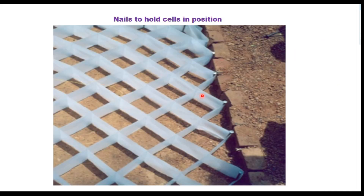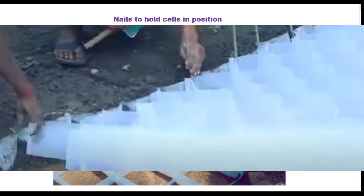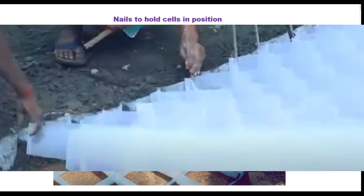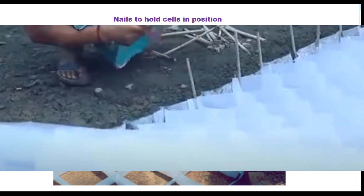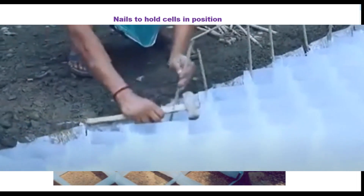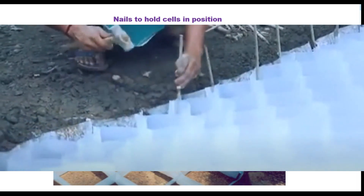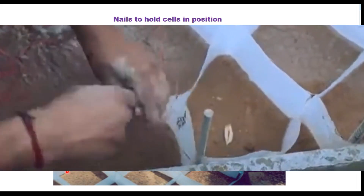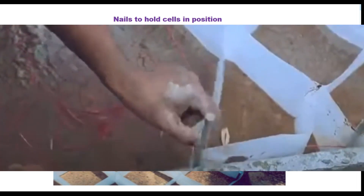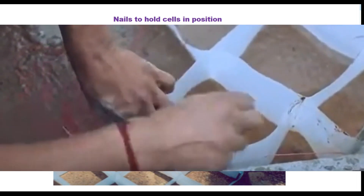These plastic cells do not have much strength, and therefore to keep them in position we put spikes or nails here to hold them. An island pad is also stretched so that they do not collapse during placing of the concrete.